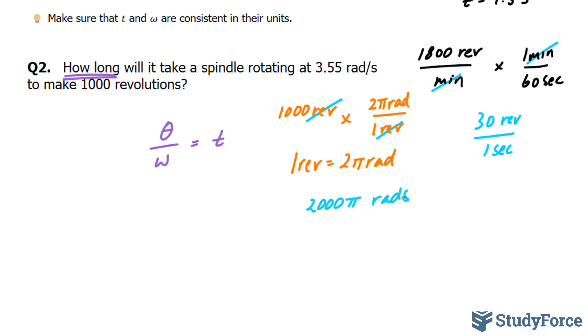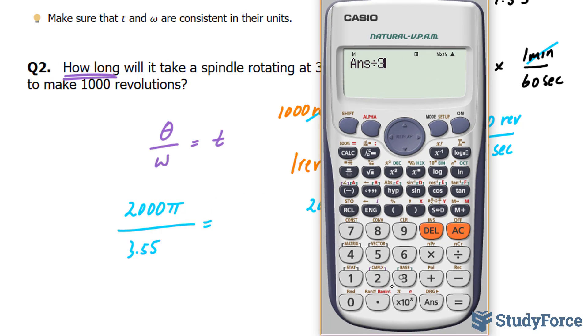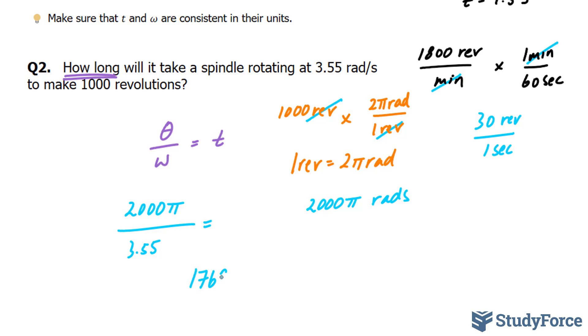And now, we can substitute both of these numbers into our formula where we have 2,000 pi over our omega is 3.55. And we should end up with an answer that is exclusively in seconds. Dividing this by 3.55 gives us 1,769.9. 1,769.9 seconds. That is equal to my time.